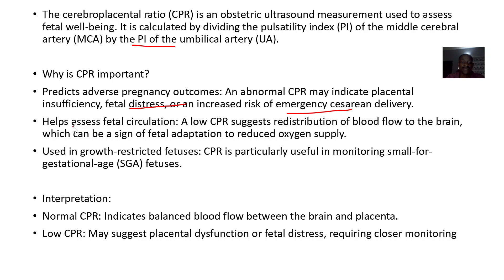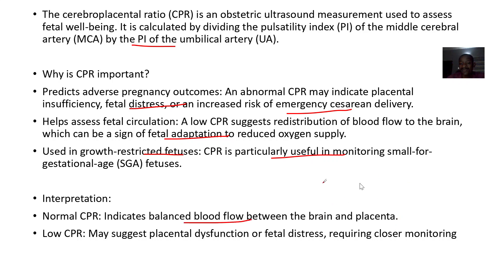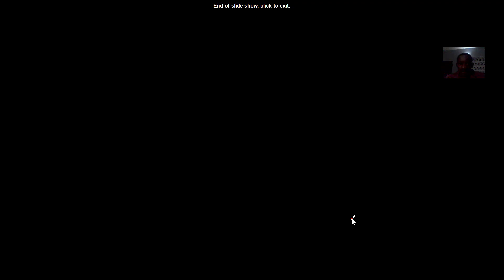It helps to assess fetal circulation. It suggests redistribution of blood to the brain, which can be a sign of fetal adaptation to reduced oxygen supply. It's also used in growth-restricted fetuses for monitoring intrauterine growth restriction. A normal ratio indicates balanced blood flow between the brain and placenta, while a low ratio suggests placental dysfunction or fetal distress and requires closer monitoring.